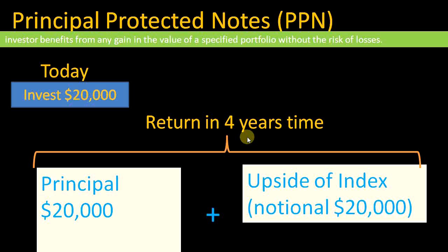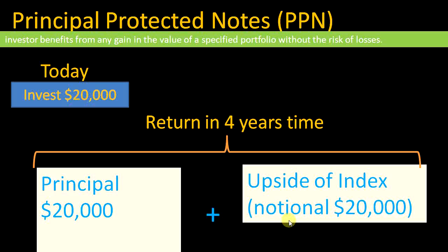The terms of the note are that the principal itself is protected. No matter what happens in the market, the client will still receive the principal of $20,000 at the end of four years, plus the note provides the benefit of any upside of a particular index to a notional value of $20,000. If the index performs well over four years, the investor receives the upside benefit, but if the index performs badly, the investor still gets back the $20,000 without incurring any losses.